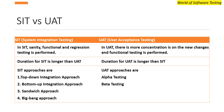In SIT, functional, sanity, and regression testing are performed. In UAT there is more concentration on new changes and functional testing. For example, across multiple releases — release one, two, three, four — there are new functionalities each time, so UAT mainly focuses on those new changes.